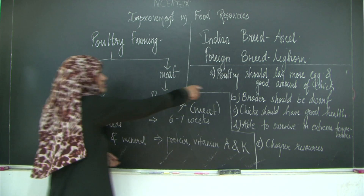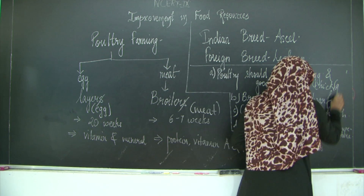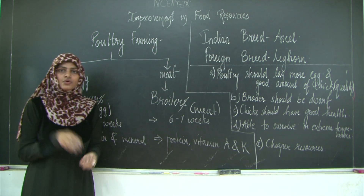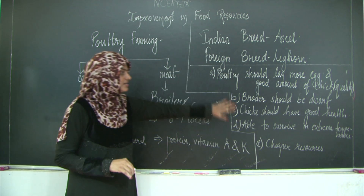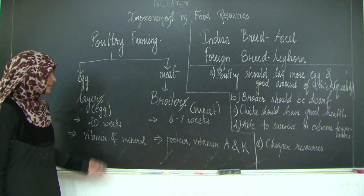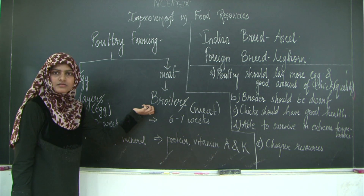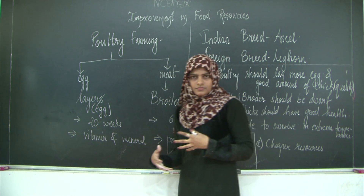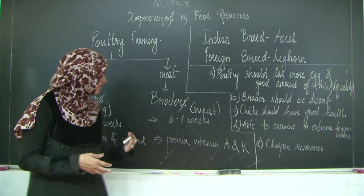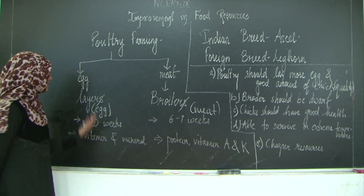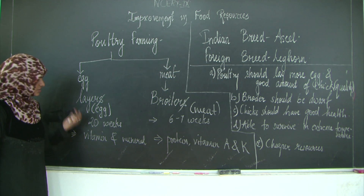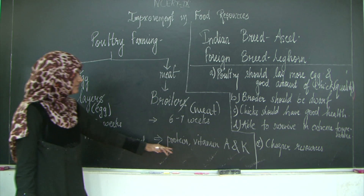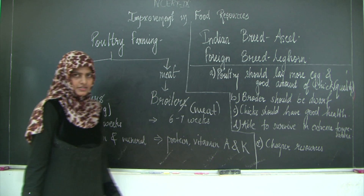So cheaper resources should be used for the same breeds — whatever hybrid you have got, they should be able to eat cheaper resources and give you more eggs, and the quality of the chicks should be good. These are the different characteristics for which you do poultry farming, and poultry farming can be done for layers as well as broilers. Once we do breeding, the next thing is to give them food. For egg-laying poultry, give vitamin and mineral rich diet; for broilers, give protein, vitamin A, and vitamin K rich diet.